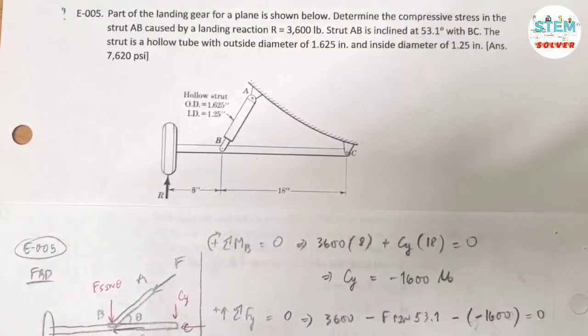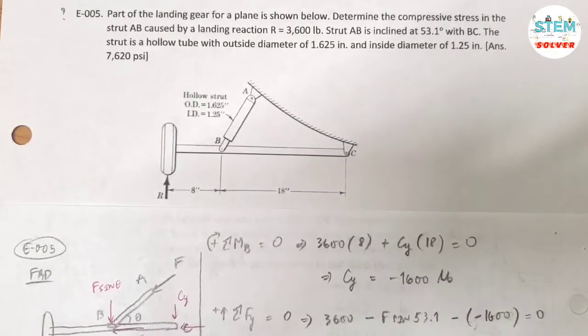Part of the landing gear of a plane is shown below. Determine the compressive stress in the strut AB caused by a landing reaction R equals 36,000 pounds. Strut AB is inclined at 53.1 degrees with BC. The strut is a hollow tube with outside diameter of 1.625 inches and inside diameter of 1.25 inches.